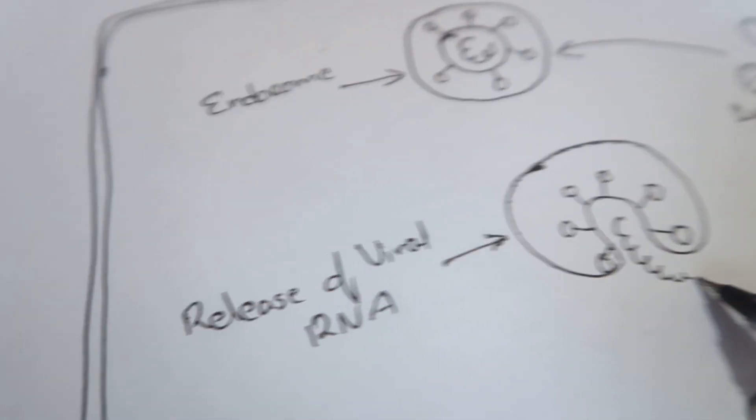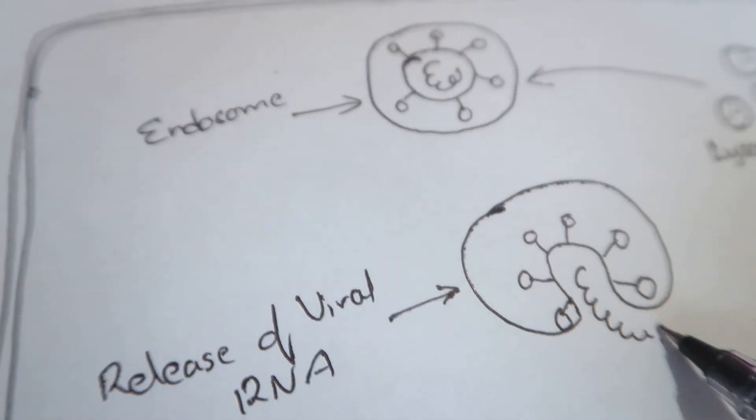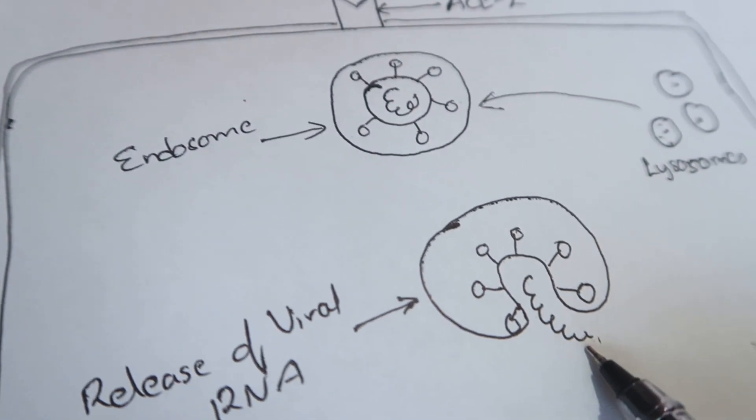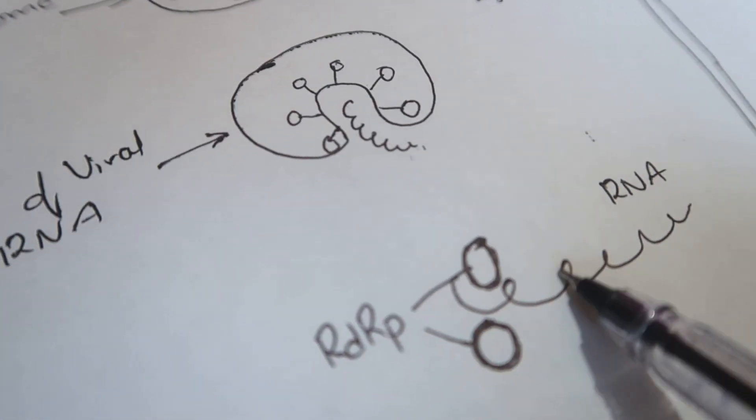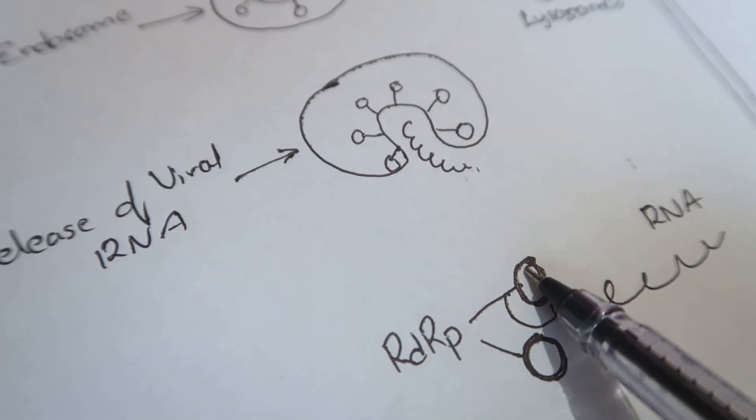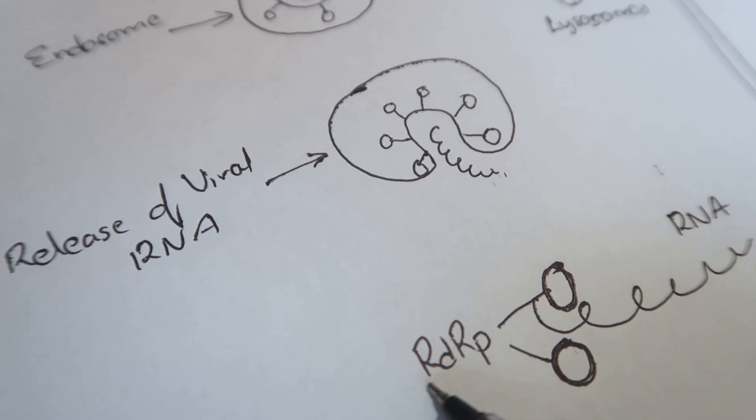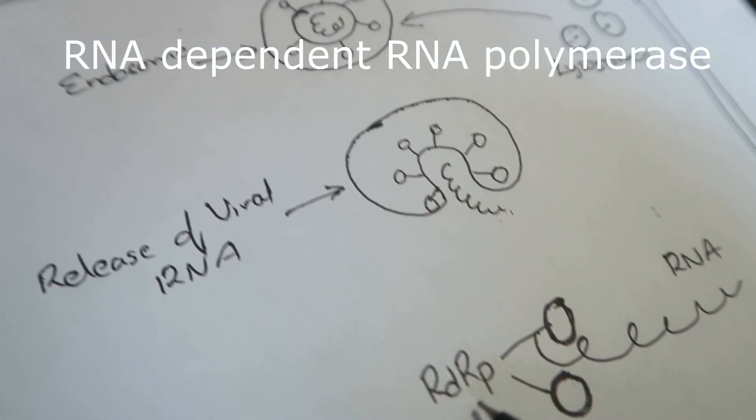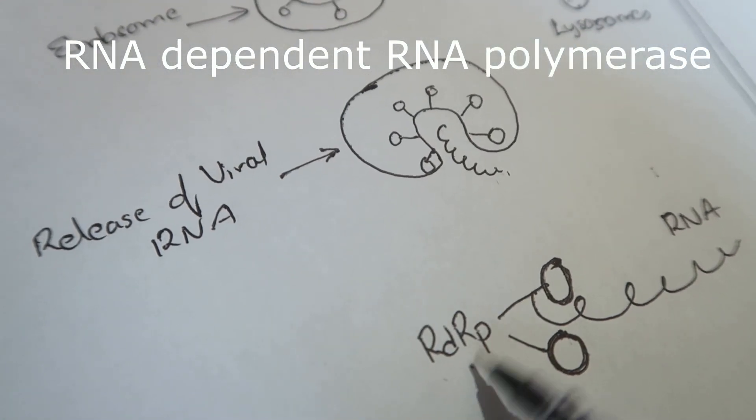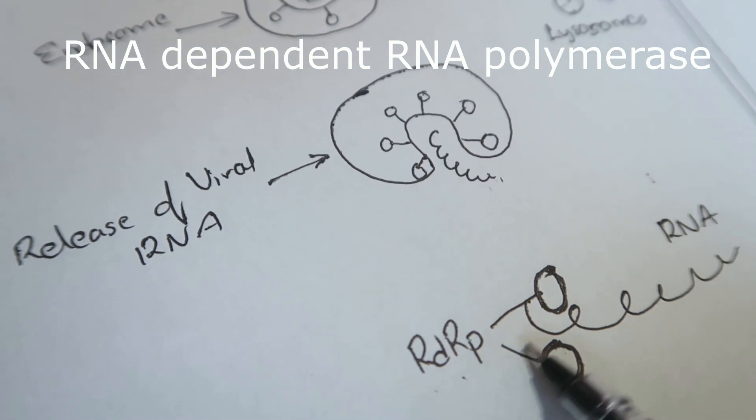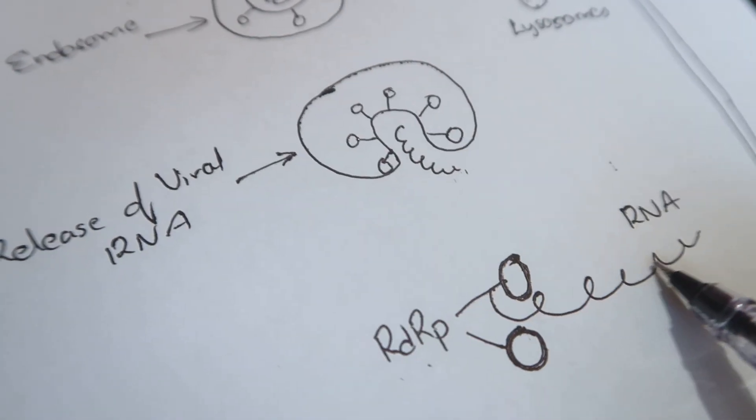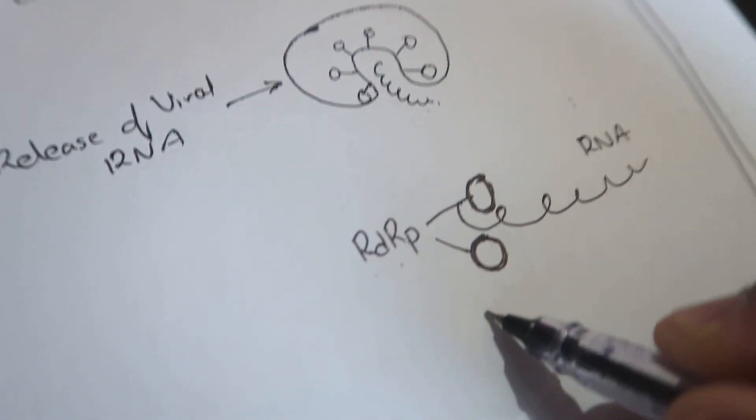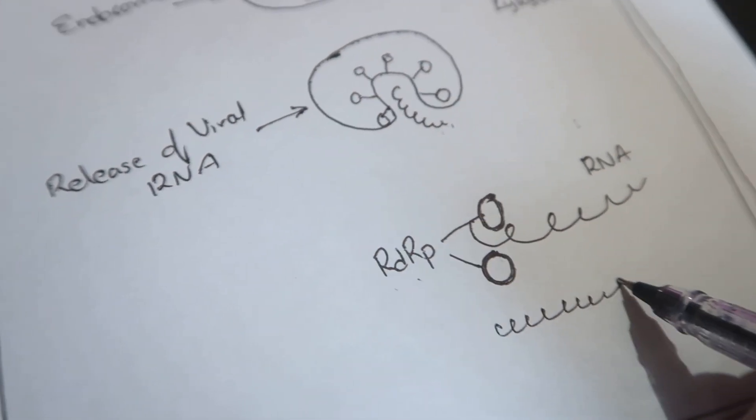The release of viral RNA into the cytoplasm. Now this RNA will be acted upon by these proteins called RDRP or RNA dependent RNA polymerase. What these proteins do is they make a copy of this RNA, so they will make several copies of the RNA.